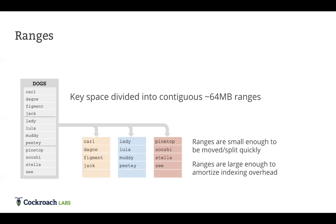Data is placed into ranges using order-preserving data distribution. For example, dog names are ordered lexicographically: Carl comes before Dagny, Dagny before Figment, Figment before Jack. This is an extremely important design point. We could have used a consistent hashing scheme like Cassandra does, but we did not, because in order to implement full SQL you essentially need this order-preserving data distribution.